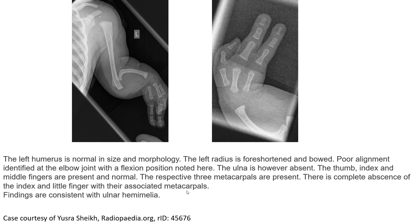This is an example of the left upper limb. The left radius is short and bowed, with an abnormal arrangement identified at the elbow joint in a flexion position. The ulna is absent. The index and middle fingers are present and normal; however, there is complete absence of the index and middle finger metacarpals, with their associated findings consistent with ulnar hemimelia.